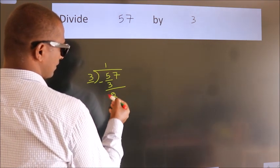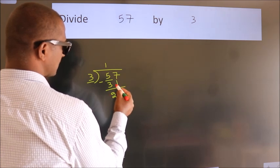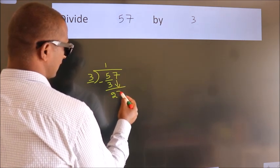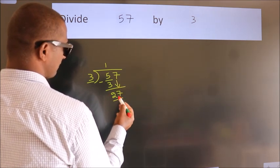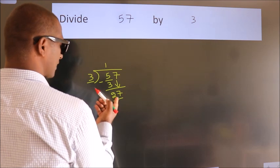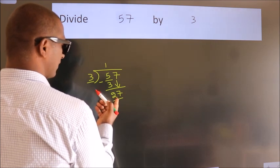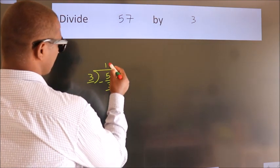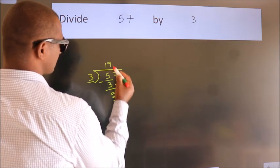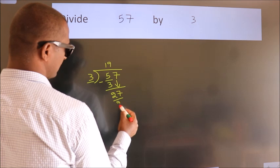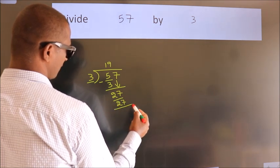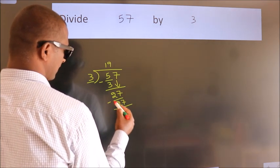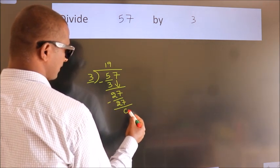After this, bring down the beside number — 7 down, so 27. When do we get 27 in the 3 times table? 3 nines are 27. Now we subtract. We get 0.